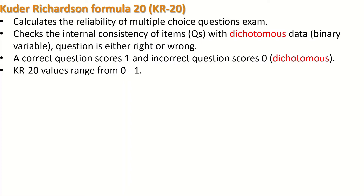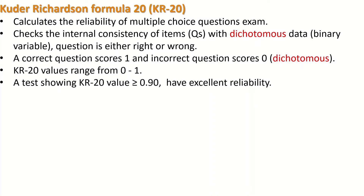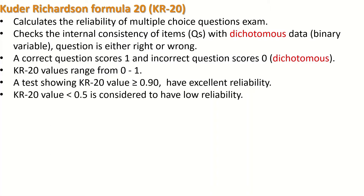KR20 values range from zero to one. A test showing a KR20 value equal to 0.9 or greater has excellent reliability. On the other hand, a KR20 value of less than 0.5 is considered to have low reliability.